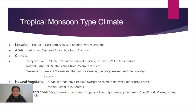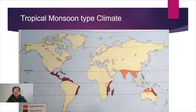Once one crop is harvested, another is immediately sown, so some crop is always on the field. Major food crops grown are rice, wheat, maize, barley, millets, grams, and pulses. Cash crops include sugarcane, cotton, and tea cultivation on hilly and mountainous regions. In areas with very heavy rainfall and moist conditions, spices and rubber cultivation are also done.